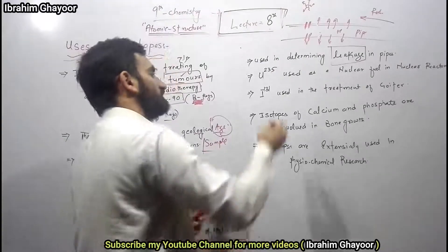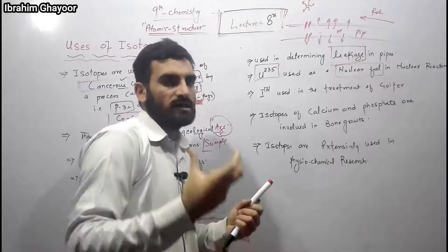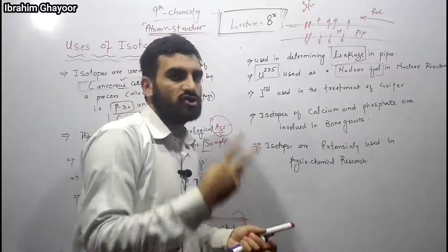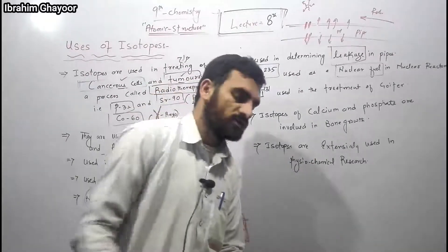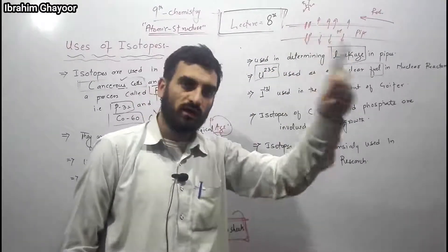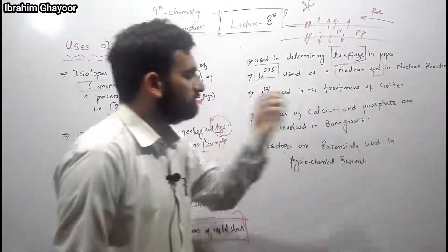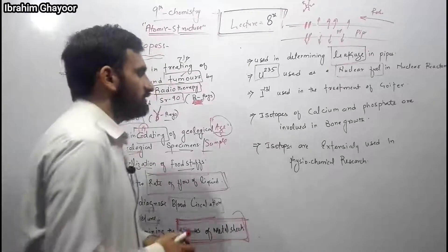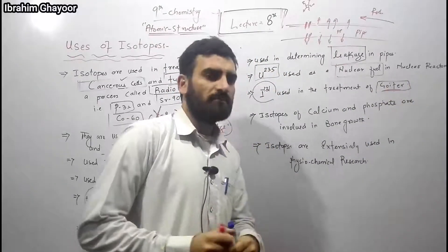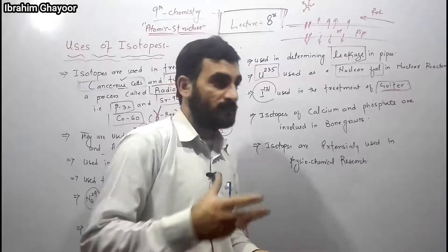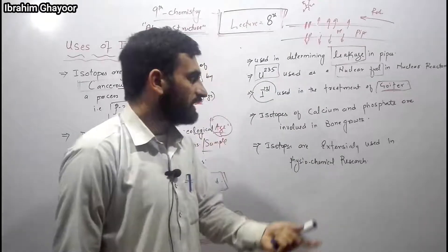Uranium-235 is exclusively used as nuclear fuel in nuclear reactors. In a nuclear reaction, uranium undergoes fission and releases a very high amount of heat energy. This heat energy produces a blast of steam, which drives a turbine. The turbine, through magnetic flux, drives a generator to produce electricity. Uranium-235 is thus used in nuclear power plants to generate electrical energy.